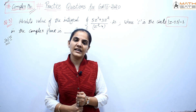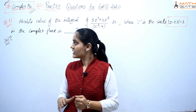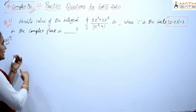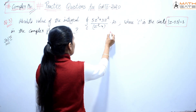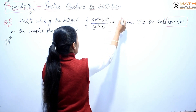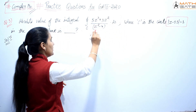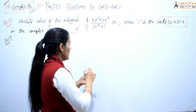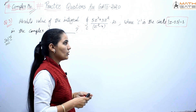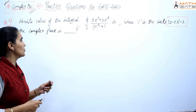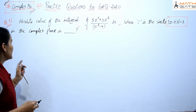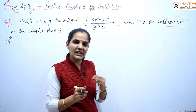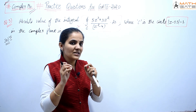Hello students, welcome to Math Gate. Let's discuss the next question of complex numbers. The question is: find the absolute value of the closed integration C of (5z³ + 3z²) / (z² - 4) dz, where C is the circle |z - 1.5| = 1 in the complex plane.